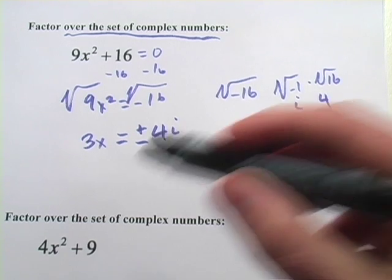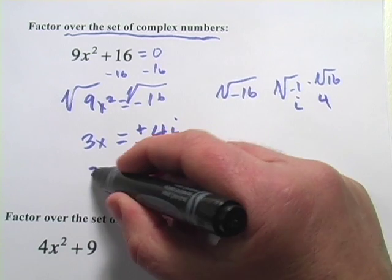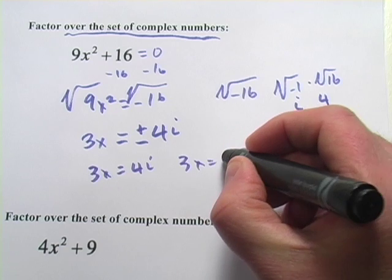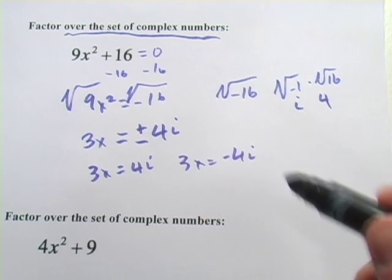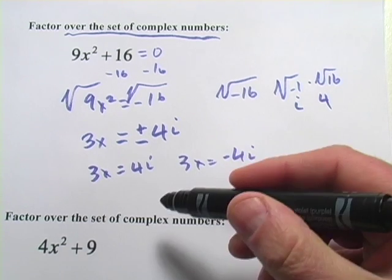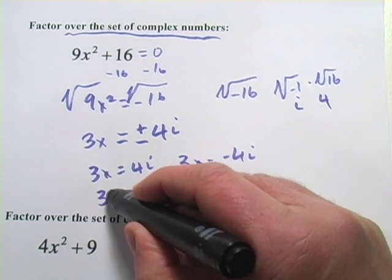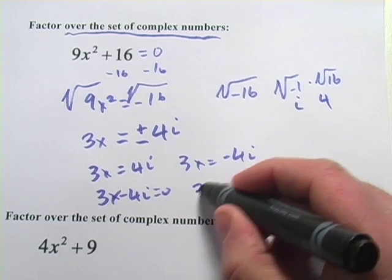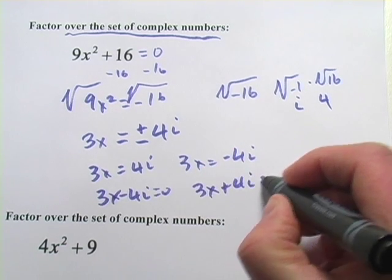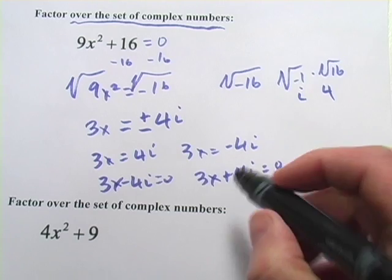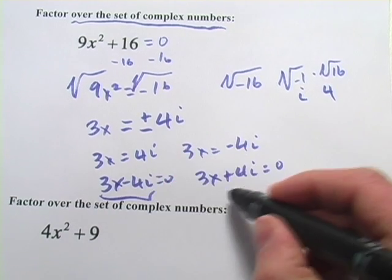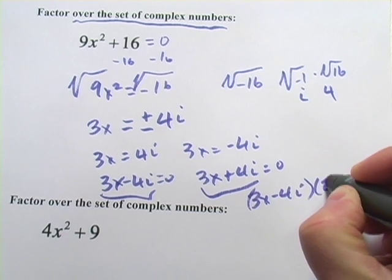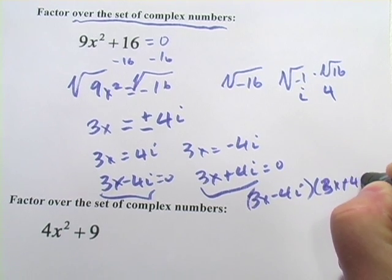Now I'm going to kind of go back in the other direction. I've got 3x equals positive 4i, and 3x equals negative 4i. If I want to put these back in the form of factors, I'd set them equal to zero again. For this one I'd subtract 4i, so I've got 3x minus 4i equals zero, and 3x plus 4i equals zero. So my factors here are going to be this chunk and this chunk: 3x minus 4i and 3x plus 4i.